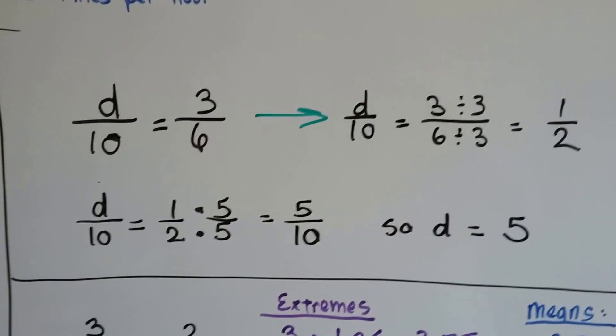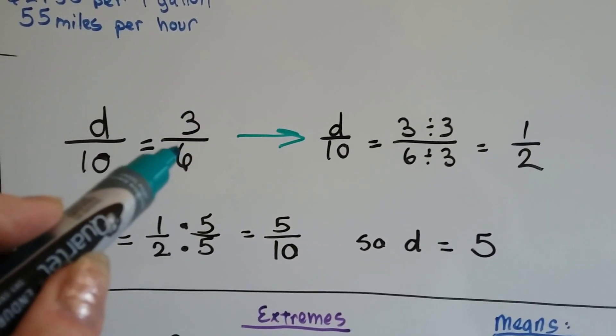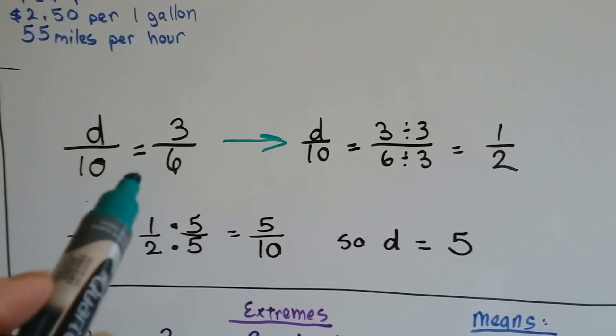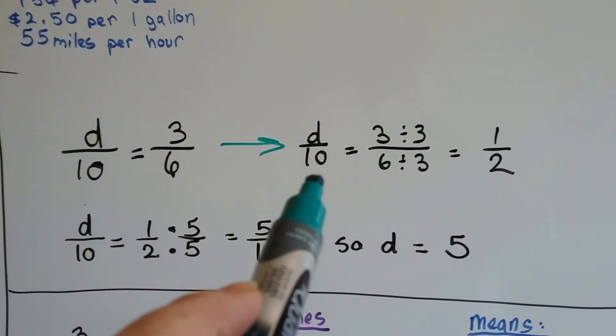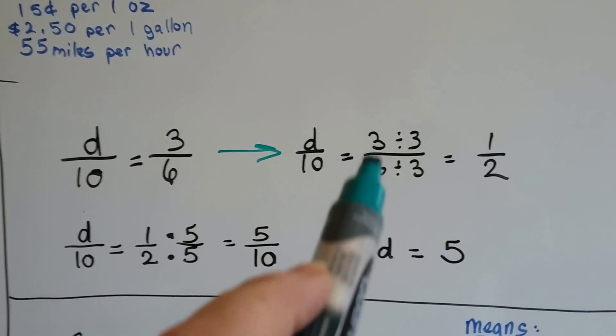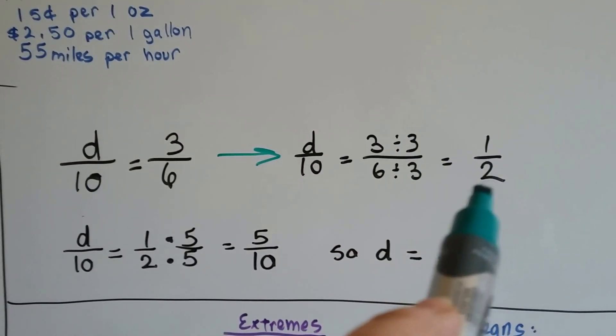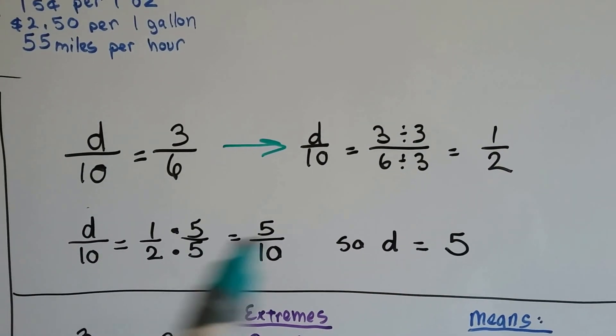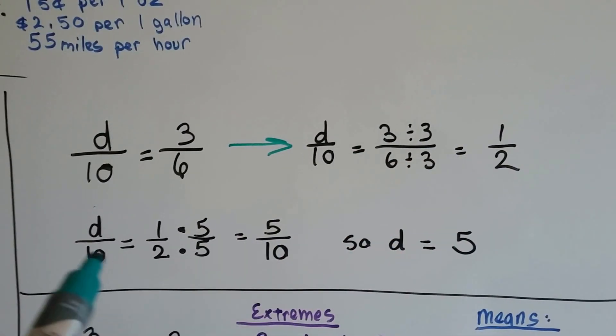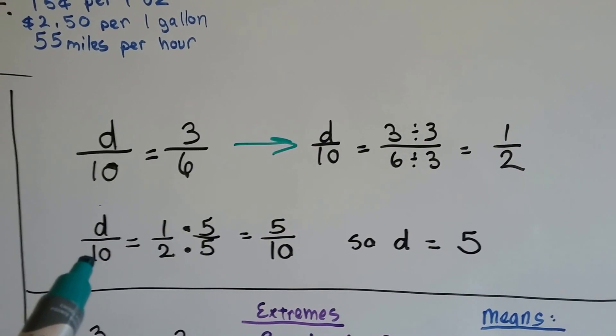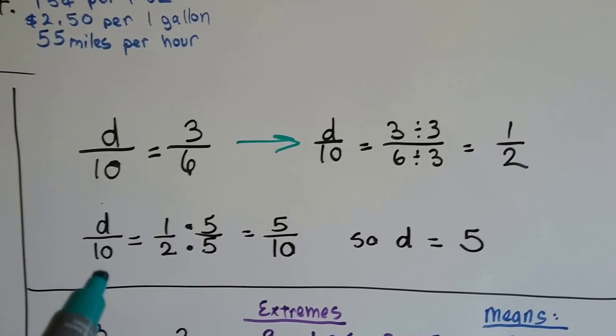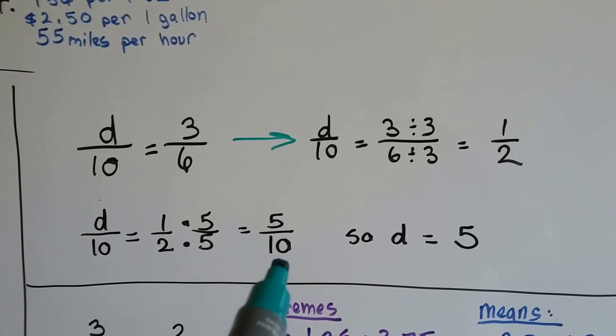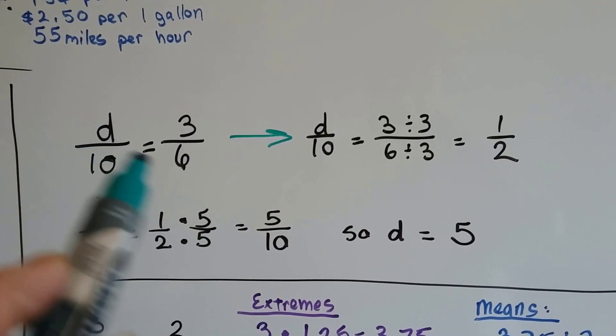Now we've got d over 10 is equal to 3 over 6. We need to make these equivalent proportions. So what we do is divide the 3 sixths by 3 and get a half. That's simplifying it to its lowest terms. So if 3 over 6 is a half, then d over 10 has to be a half. What do we need to make d over 10 a half? We need to multiply the numerator and denominator by 5, and it becomes 5 tenths. So we know d is 5.